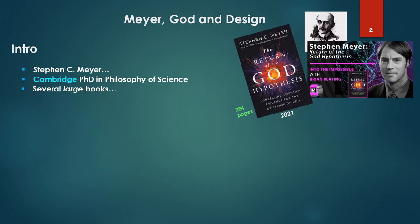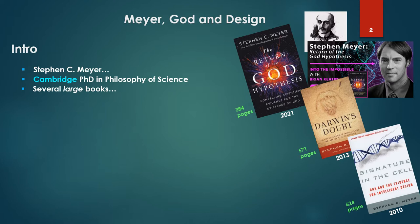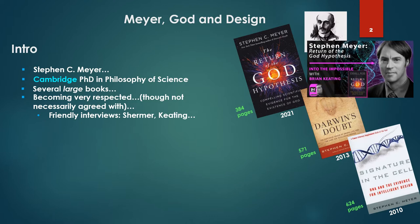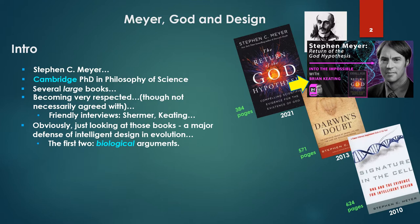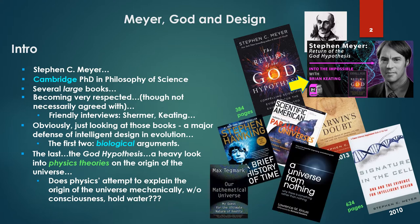The last one is The Return of the God Hypothesis, Darwin's Doubt at 571 pages, and Signature in the Cell at 624 pages. Very large, very detailed. He's becoming very respected, though not necessarily agreed with, with friendly interviews from Michael Shermer and others. It's a major defense of intelligent design in evolution. The first two books, 2010 and 2013, are biological arguments. The last is a heavy look into physics theories and the origin of the universe—Hawking, Tegmark, Lawrence Krauss, many more.